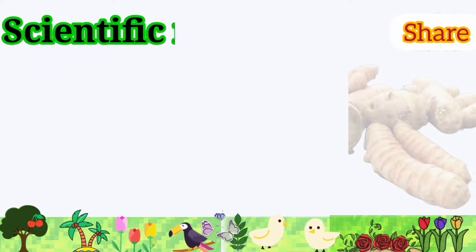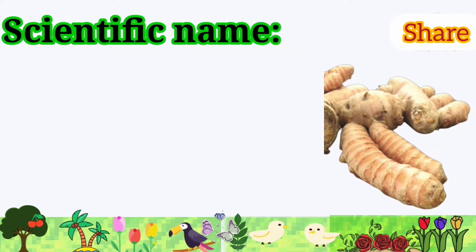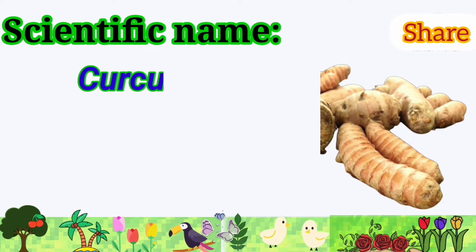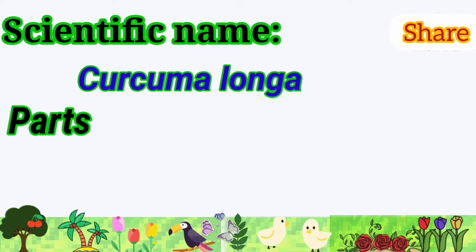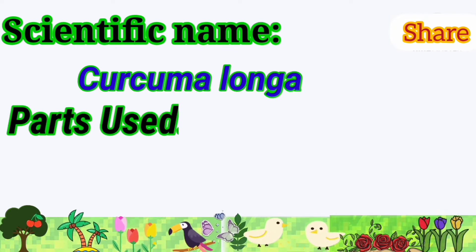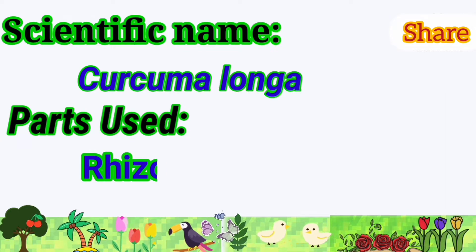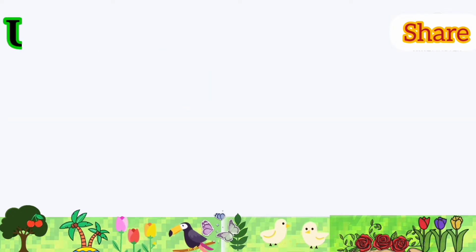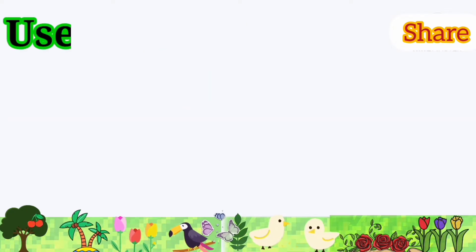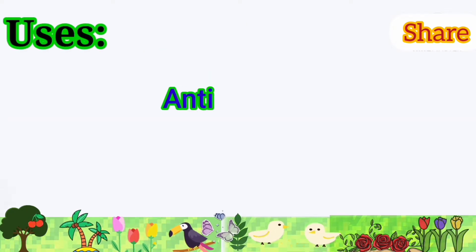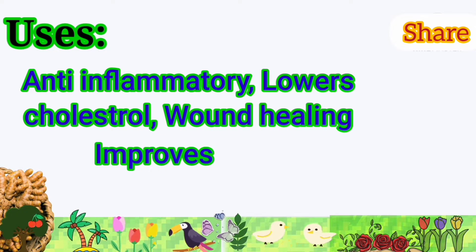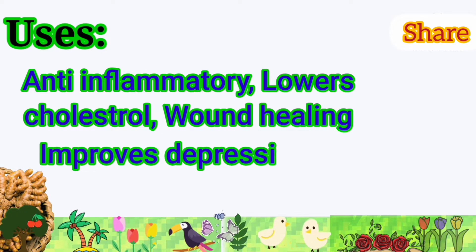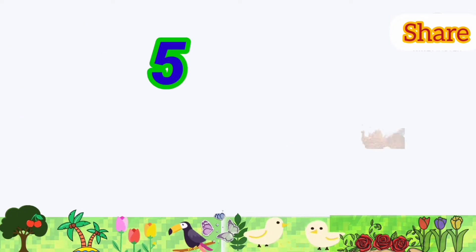Turmeric: its scientific name is Curcuma longa. Parts used are the rhizome. It is used as an anti-inflammatory, lowers cholesterol, wound healing, and improves depression.